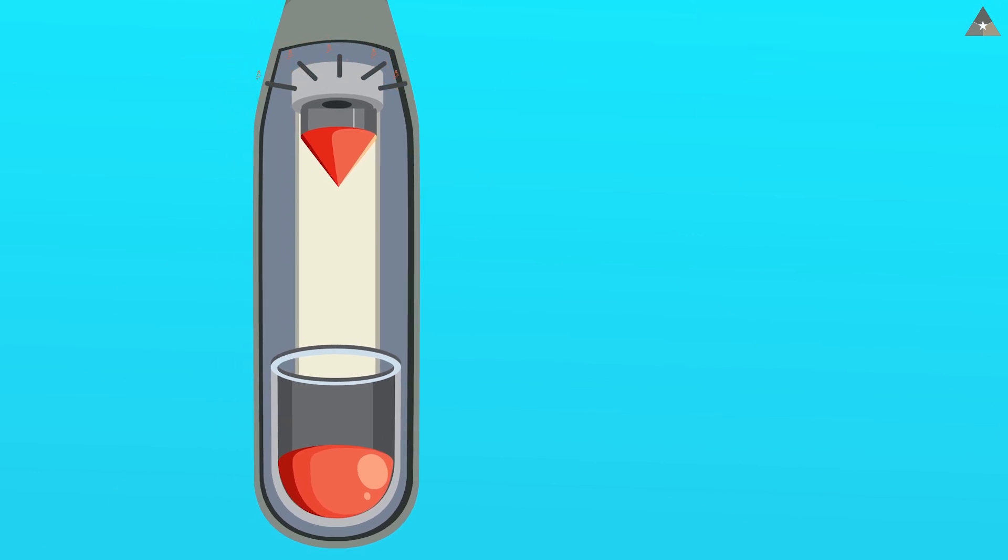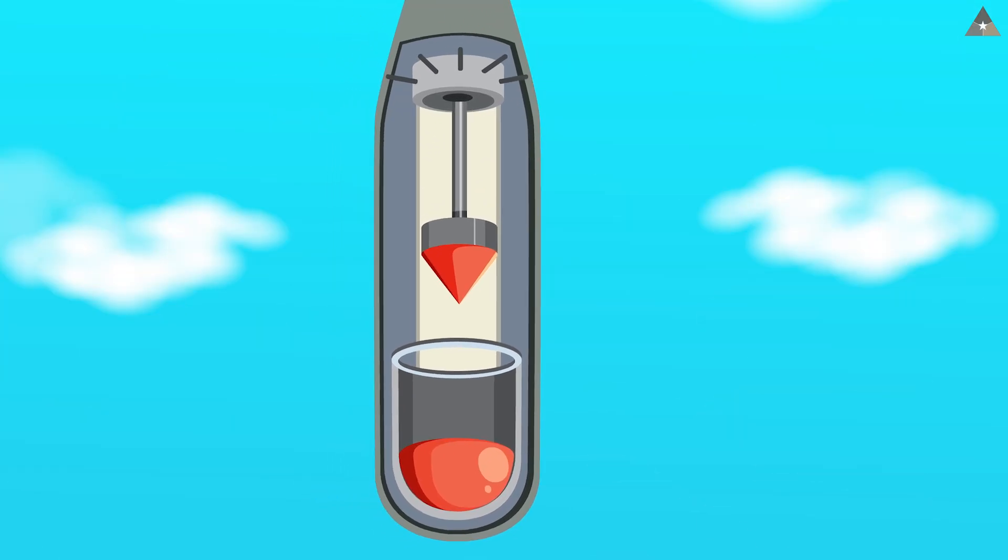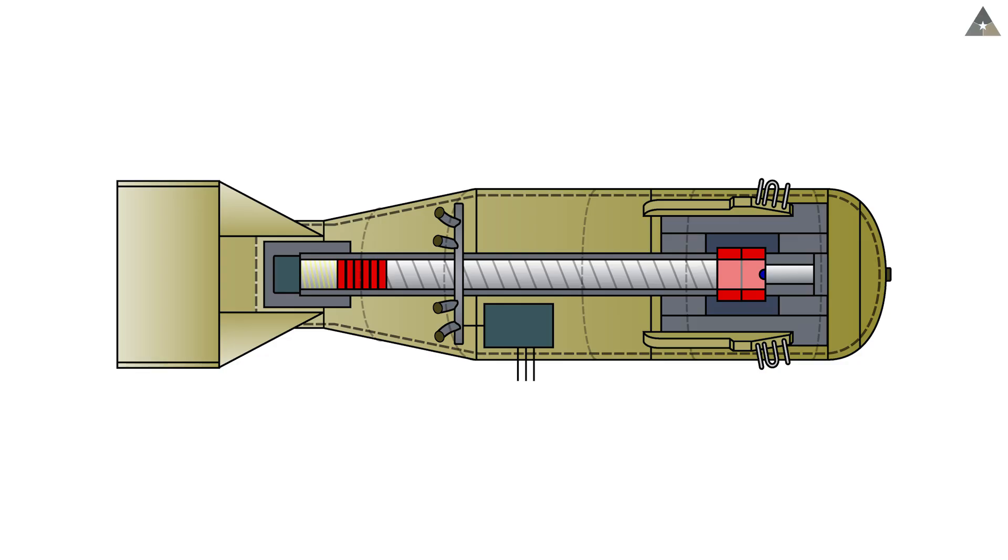The electric primers would go off, igniting the 8 pounds of cordite, propelling the 9 uranium rings and carbide disc forward at 1,000 feet per second. The uranium rings would travel 42 inches to the other side of the barrel where they would fit snugly over the inner uranium rings and impact the four polonium initiators fixed on the barrel's end.